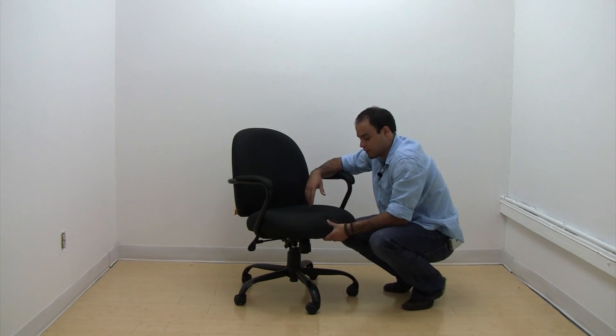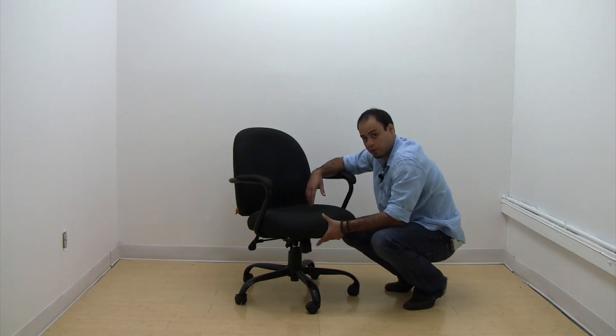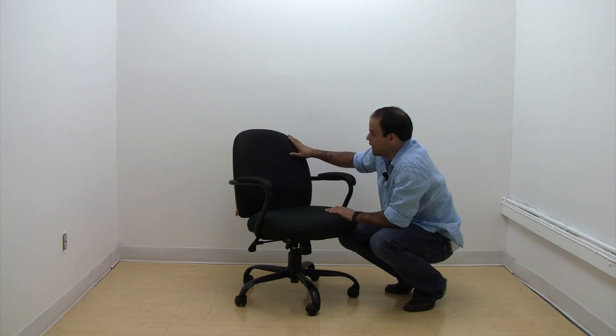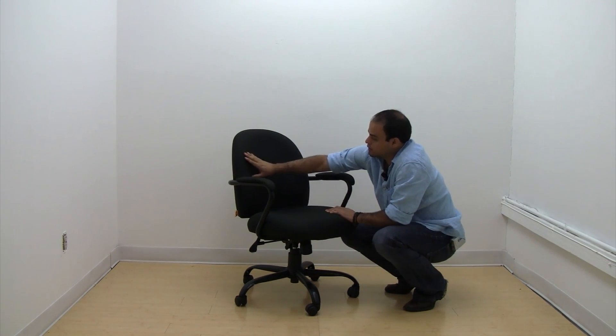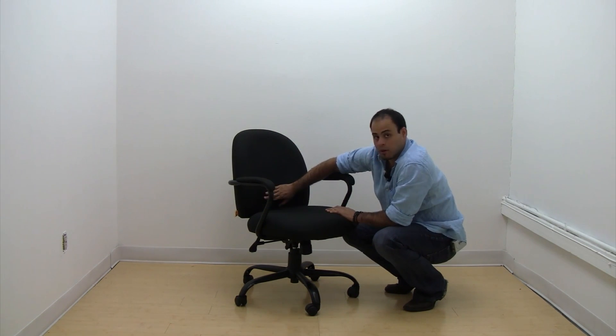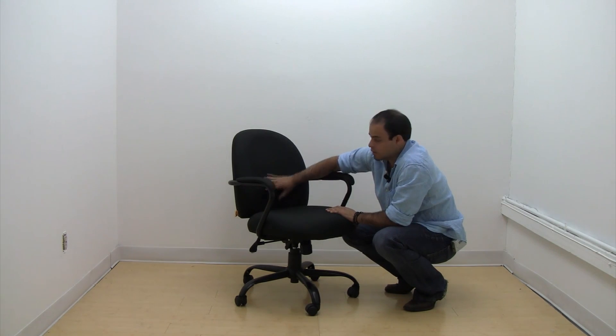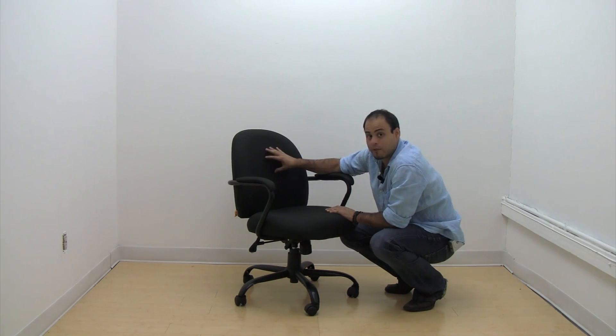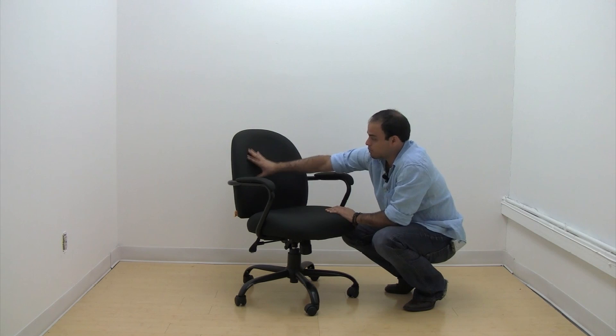The B670 has a nice thick seat with a waterfall front edge for durability. It also features a back that's contoured on the inside and a little bit of lumbar support towards the lower part of the back. Not meant specifically for lumbar support, but it does give you a good back supporting base.